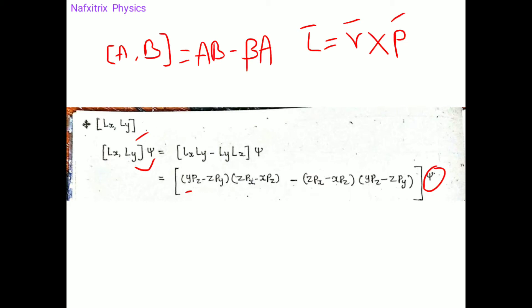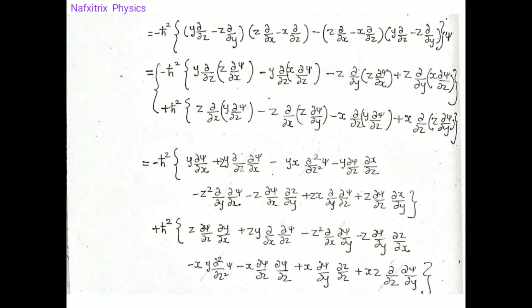From each term we get a factor of -iℏ, and in total we collect (-iℏ)² = -ℏ². This is because (-iℏ)² = (-i)²·ℏ² = (i²)·ℏ² = -ℏ², since i² = -1. So we have -ℏ² multiplied with the spatial derivative terms.